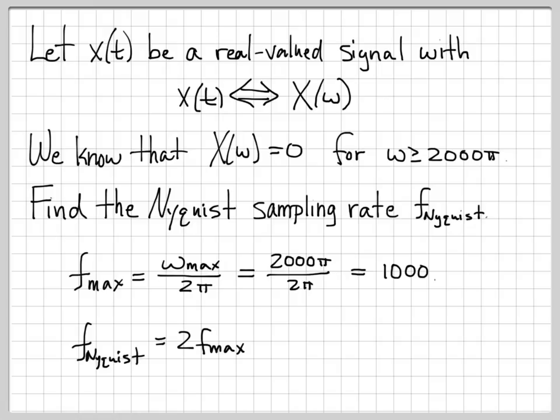We can now compute the Nyquist rate. We have a very simple relationship that relates the maximum linear frequency of a signal to the Nyquist rate, and it's just a factor of 2. So f Nyquist is equal to 2 times f max. So this is 2 times 1,000, which is 2,000 hertz.